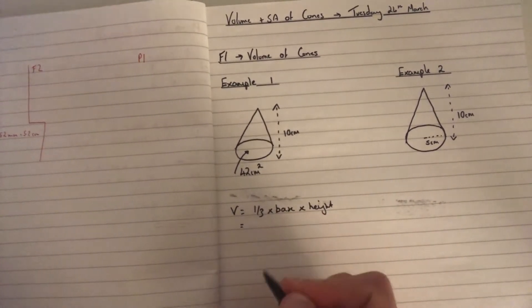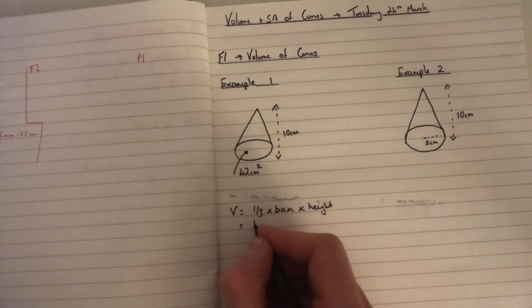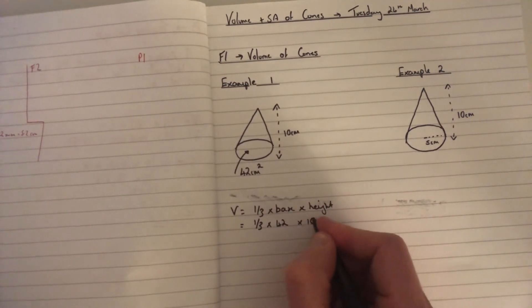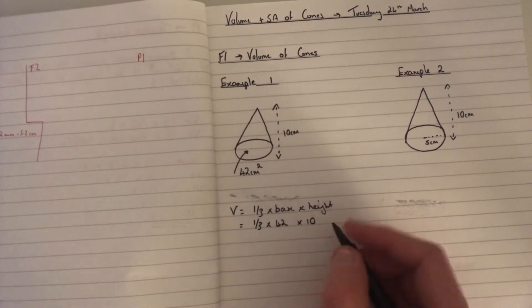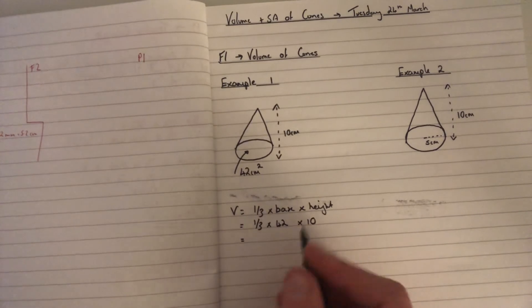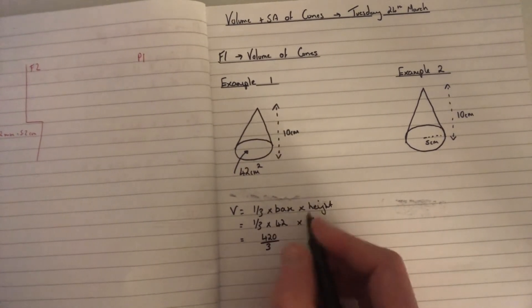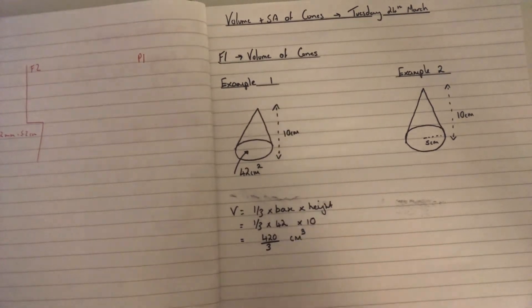So in this first example it's straightforward. It's a third times by 42 because we've already been given the area, times by a height of 10. That would be 420 over 3 centimeters cubed.